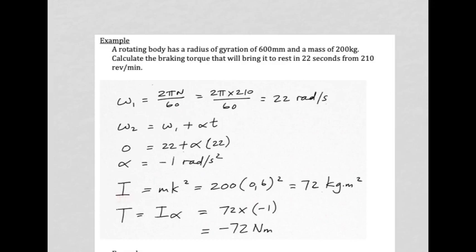With I = mk² = 200 × 0.6² = 72 kg·m², and T = Iα = 72 × (−1), the braking torque required is 72 N·m.